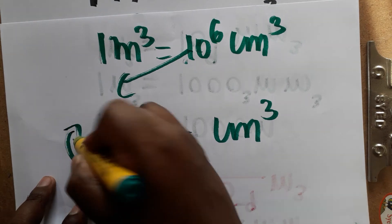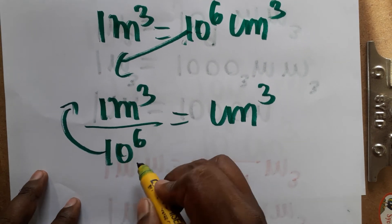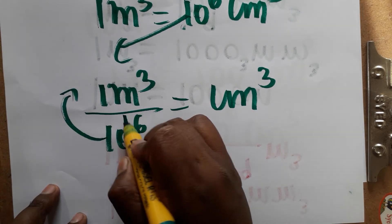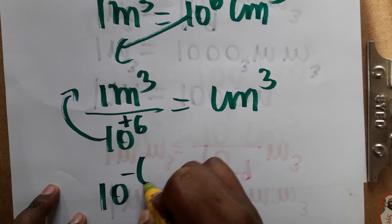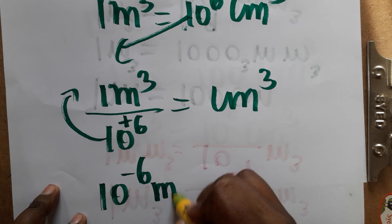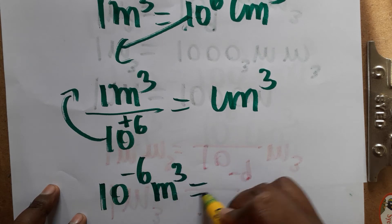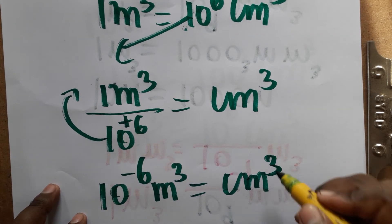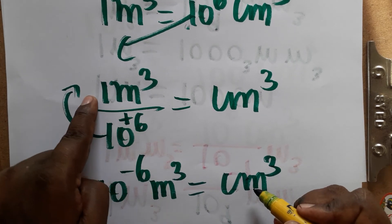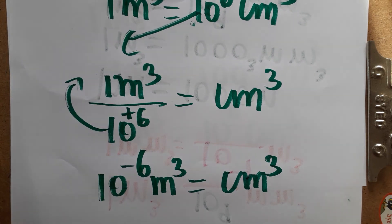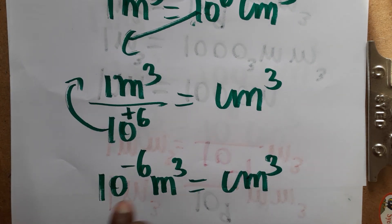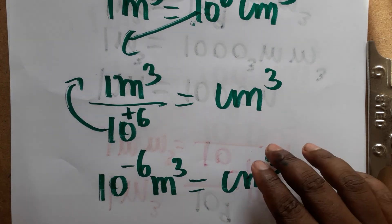When moving from denominator to numerator, 10 power plus 6 changes to 10 power minus 6. Therefore, 10 power minus 6 meter cube equals one centimeter cube — that is, 1 centimeter cube is 10 power minus 6 meter cube.